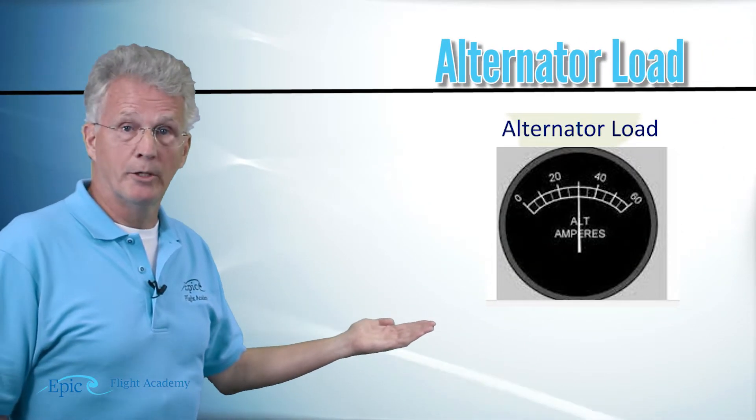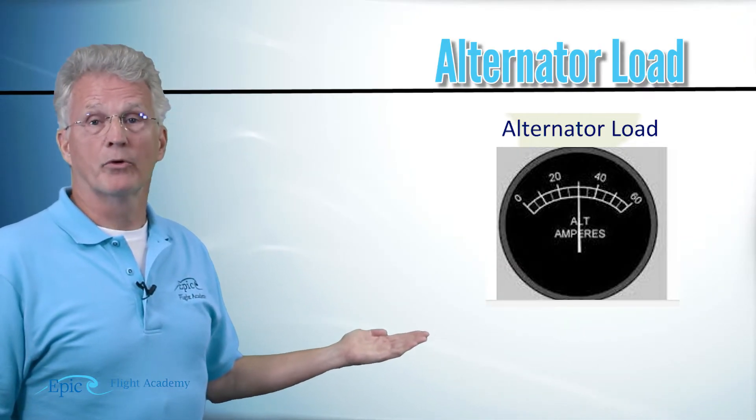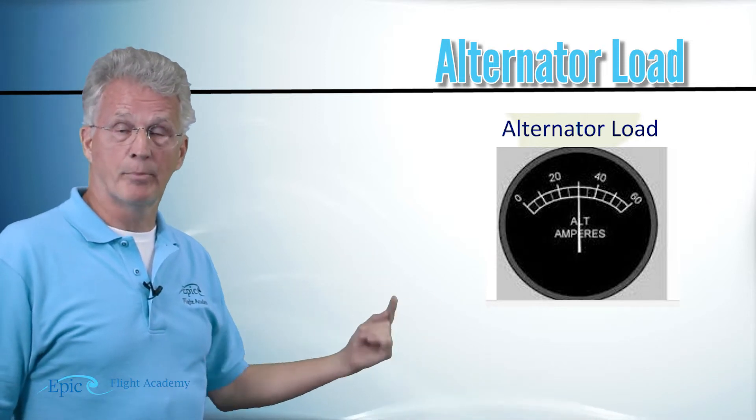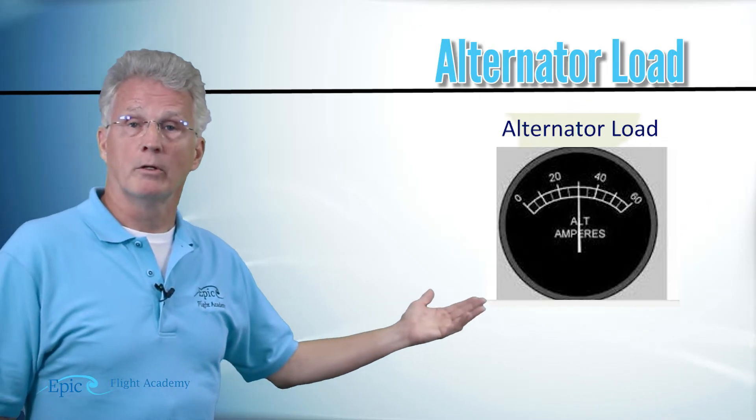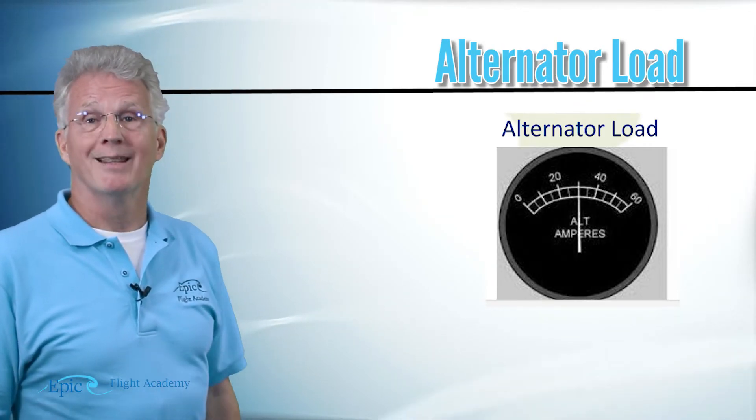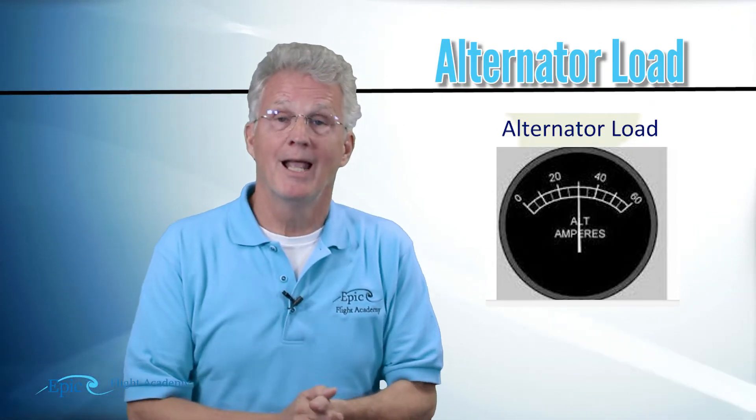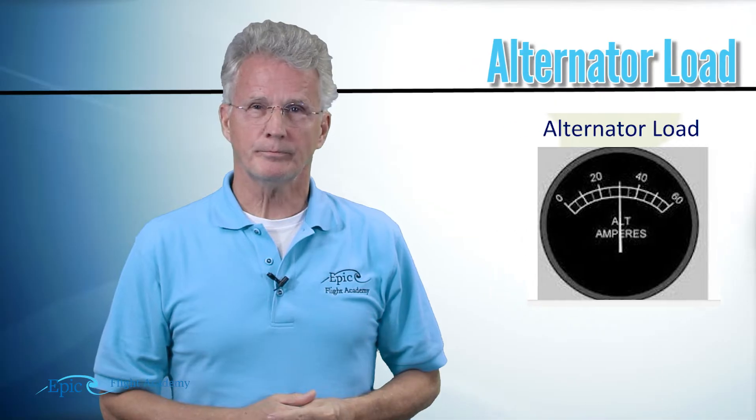Take a look at the second one. The second one is called a load meter, sometimes called an ampere load meter or an alternator load meter. Notice it goes from zero to 60, and in this example the needle is at approximately 30. What the load meter is telling me is the system is asking for 30 amps of energy, and the alternator is providing 30 amps of energy.